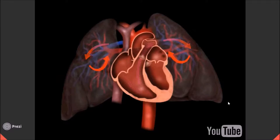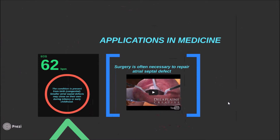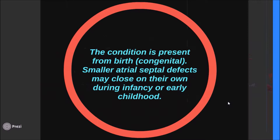We can see the communication between the two upper chambers and the combination of the two types of blood. The condition is present from birth — it is congenital. Smaller atrial septal defects may close on their own during infancy or early childhood.